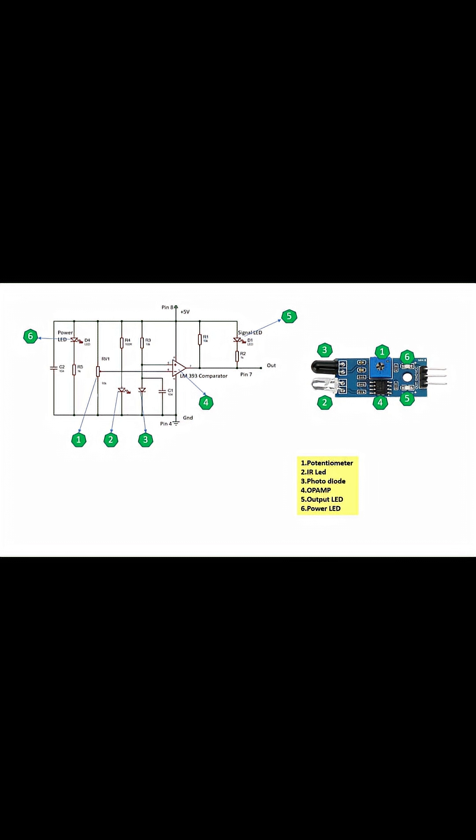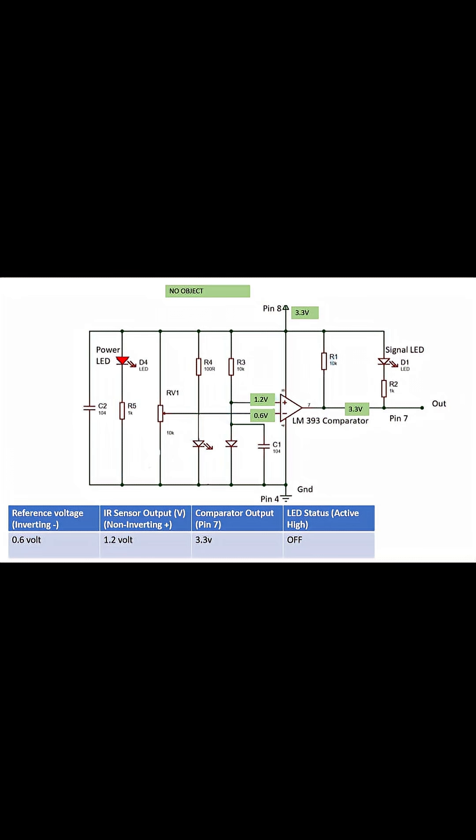Lowering the reference makes it detect smaller reflections. This is the circuit. It includes an IR LED, a photodiode, an op-amp comparator, a potentiometer for reference, and an active high-output LED in idle condition.